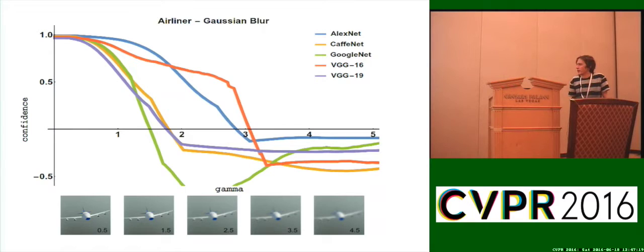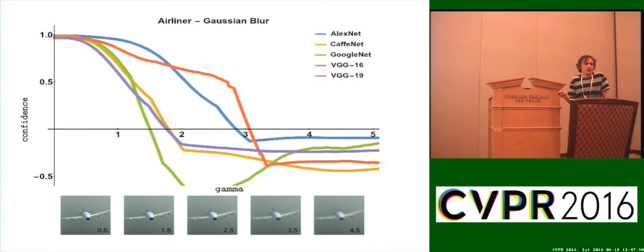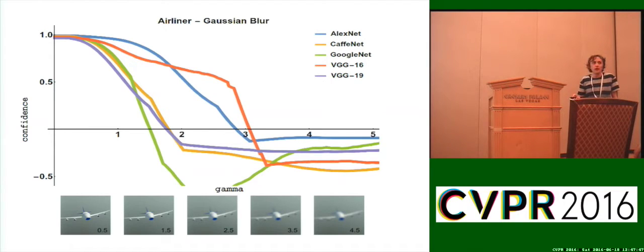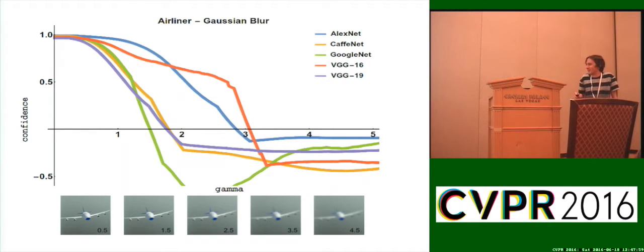Here are some more examples. This is, of course, an airplane — a version without any Gaussian blur, and a version with what I'd consider moderate Gaussian blur. We can probably all tell that this is a plane. But all of these networks — AlexNet, CaffeNet, GoogLeNet, and two variants of VGGNet — have started to fail long before we got to even this image. These networks failed early and don't get any better down the line.